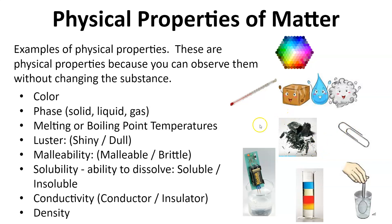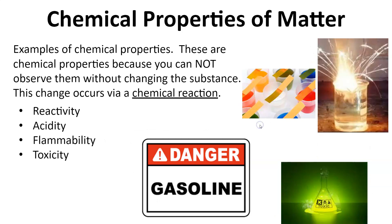On the other hand, chemical properties occur via a chemical reaction, and in order to observe them, the chemical reaction must take place. Reactivity, acidity, flammability, and toxicity are all examples of chemical properties of matter.